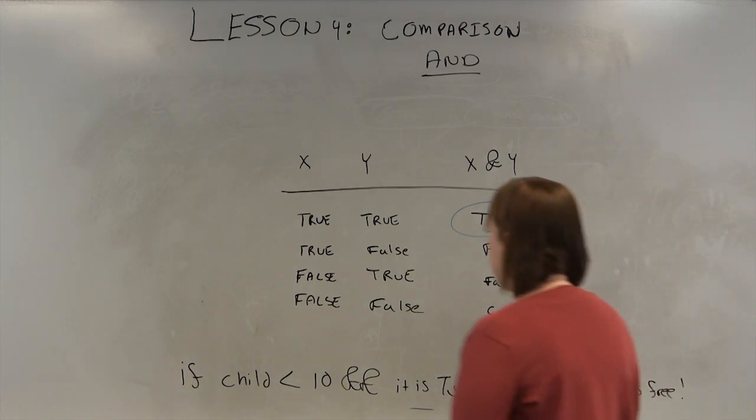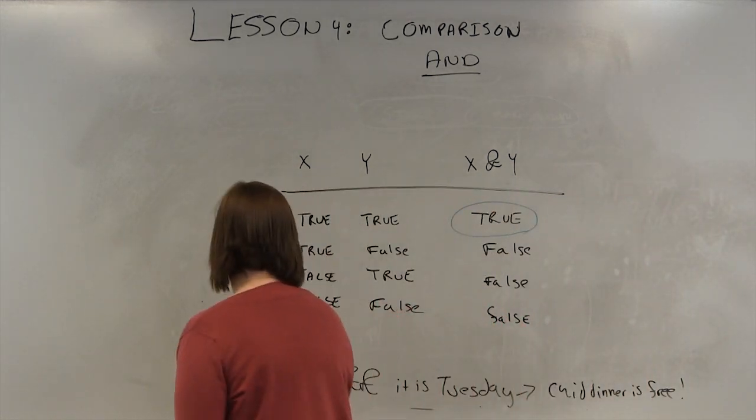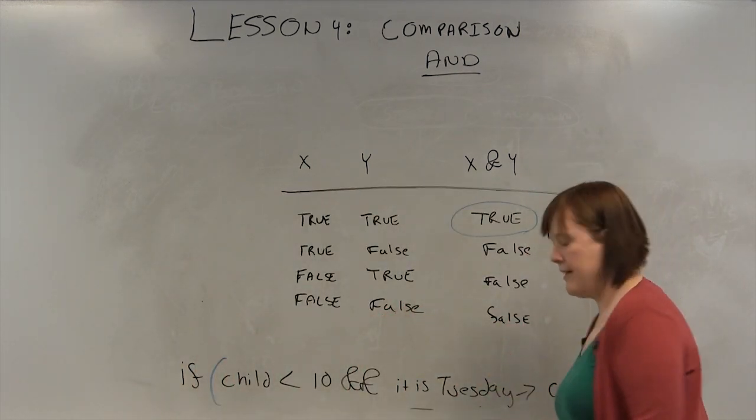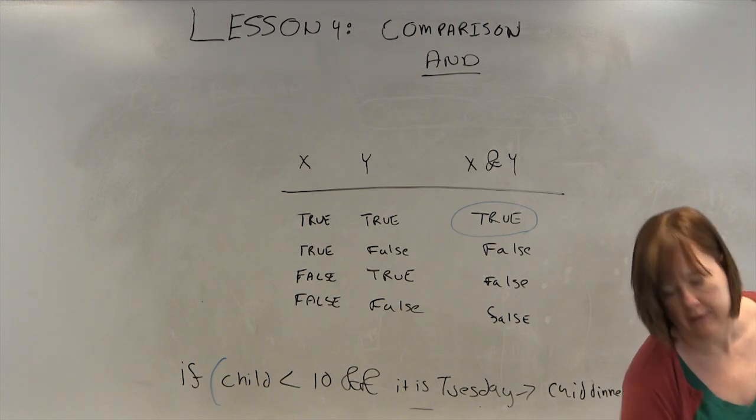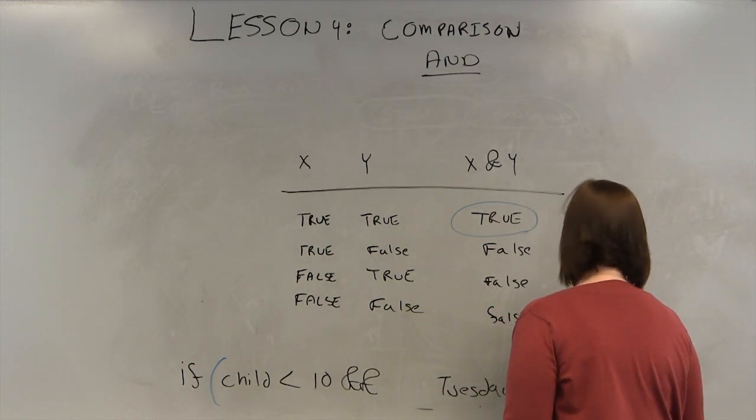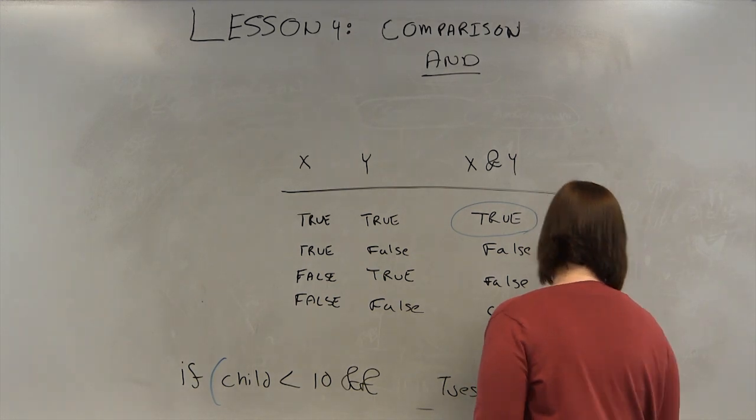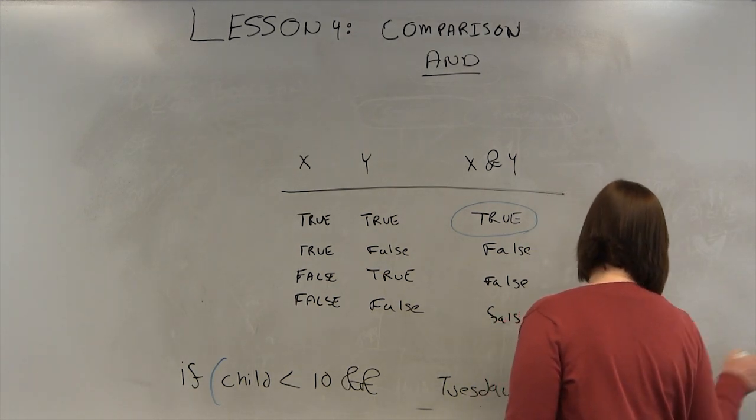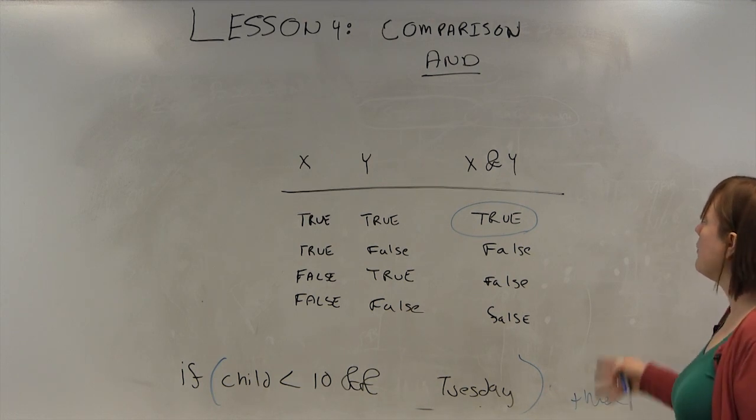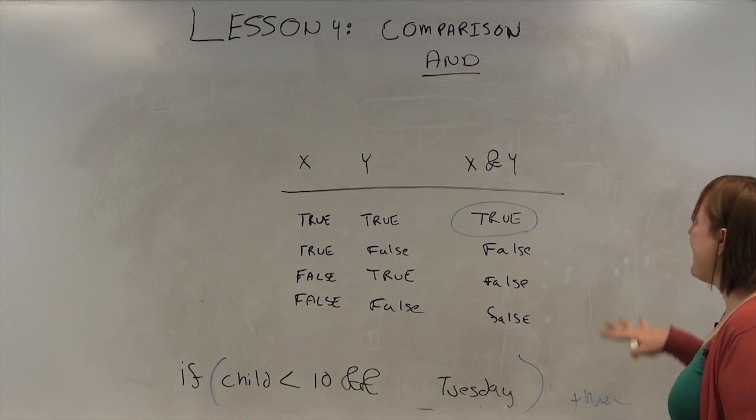And this is how you would write your statement. Now, in a programming language, you usually use parentheses if the child is under 10 and Tuesday, which if it was a Boolean, it would just be listed as true, then you would have a then meal is $0. So typically, you'll do it in parentheses like that. That's what the programming looks like. So that's your AND evaluation.